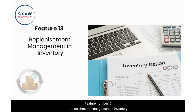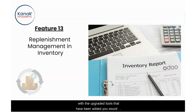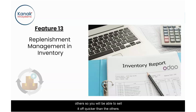Feature number thirteen: replenishment management and inventory. With the upgraded tools that have been added, you would be able to find out which product in your inventory is going to replenish sooner than the others, so you would be able to sell it off quicker.